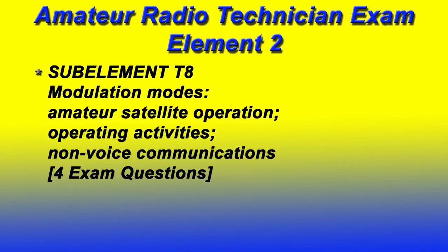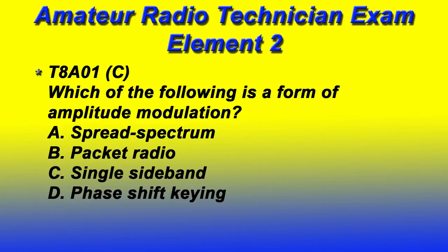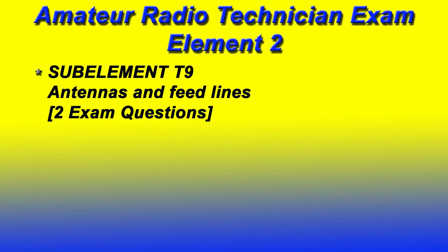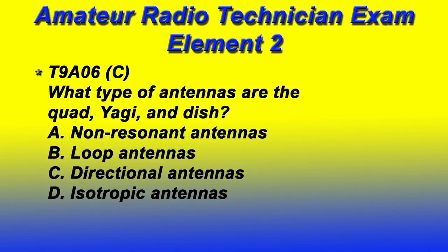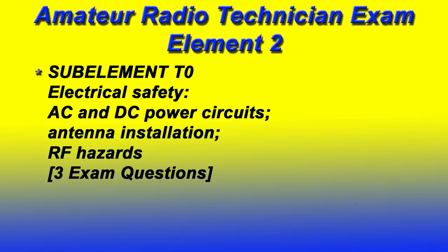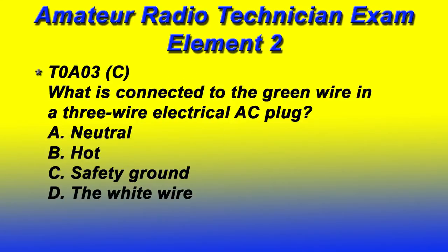T8 includes modulation modes, amateur satellite operation, operating activities, and non-voice communications — four questions from this section. T9 involves antennas and feed lines, with two questions. Lastly, T0 covers electrical safety, AC and DC power circuits, antenna installation, and RF hazards — three questions from this section.